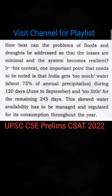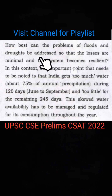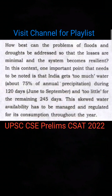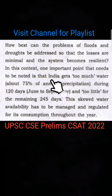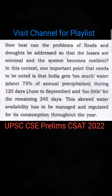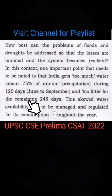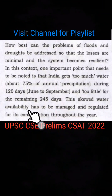How best can the problems of floods and droughts be addressed so that the losses are minimal and the system becomes resilient? In this context, one important point to note is that India gets too much water — 75% of annual precipitation falls during just 120 days, from June to September. This results in skewed and differential water availability.